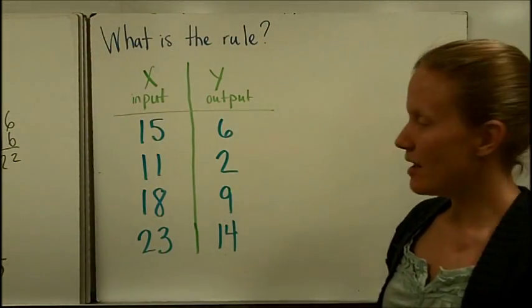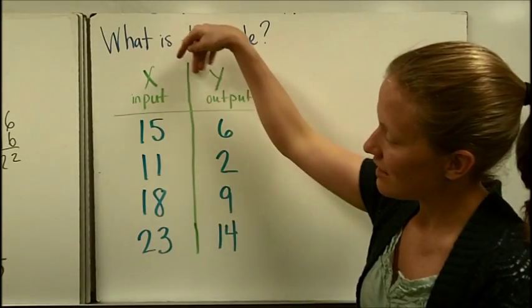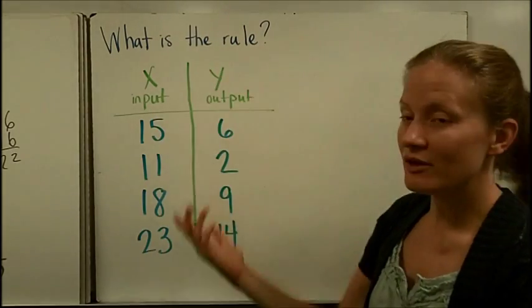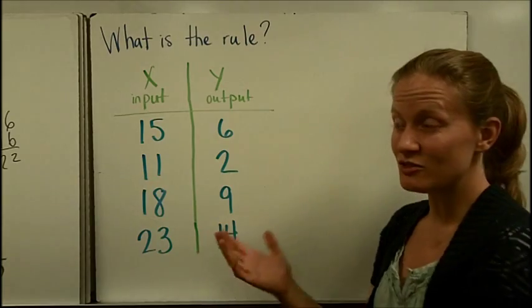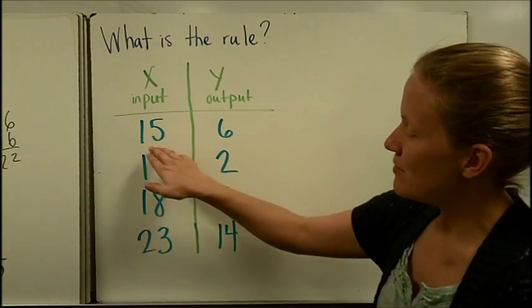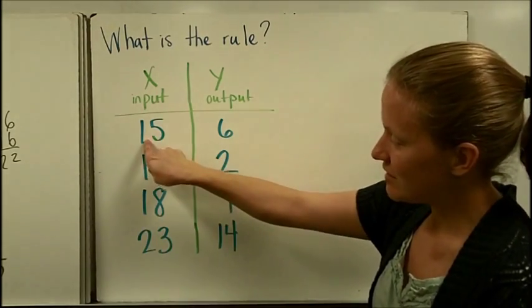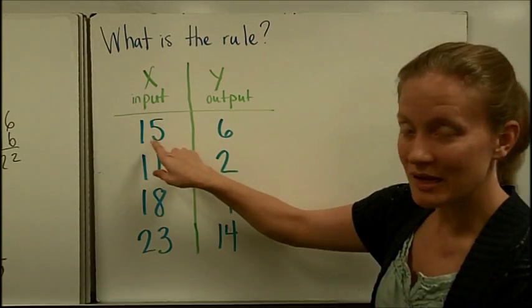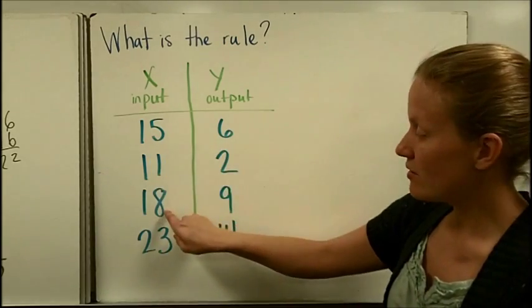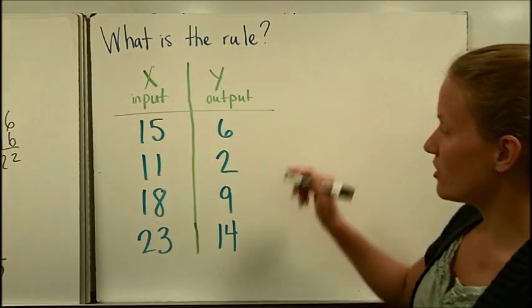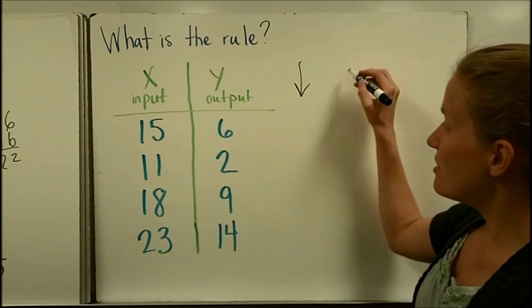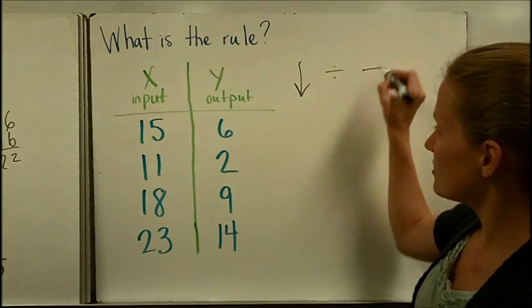Finally we have another table and we are seeing that we are putting in numbers and we are getting out numbers and we have to figure out what is the rule. This is sort of like a function machine just having the data or the numbers put in a chart to look at easily. Notice right away that if I put in a 15 and I get out a 6, my number is getting smaller. From here to here the number got smaller. 11 down to 2 getting smaller. 18 down to 9 getting smaller. So since the numbers are getting smaller from the input column to the output column, we know that it must be either division or subtraction.